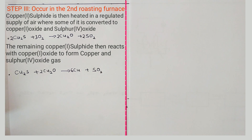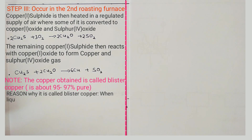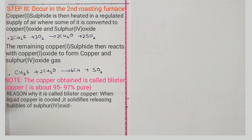The copper formed in this reaction is called blister copper. It is impure, about 95 to 97% pure. The reason it is called blister copper is because when the liquid copper formed is cooled and solidifies, it releases bubbles of sulfur four oxide gas, which gives it a blister appearance. This type of copper is used for making boilers and pipes only.